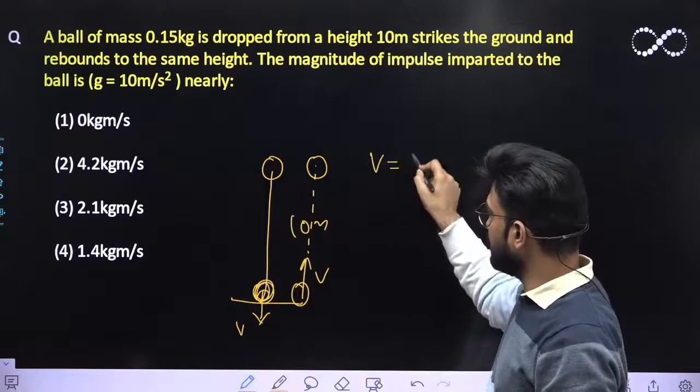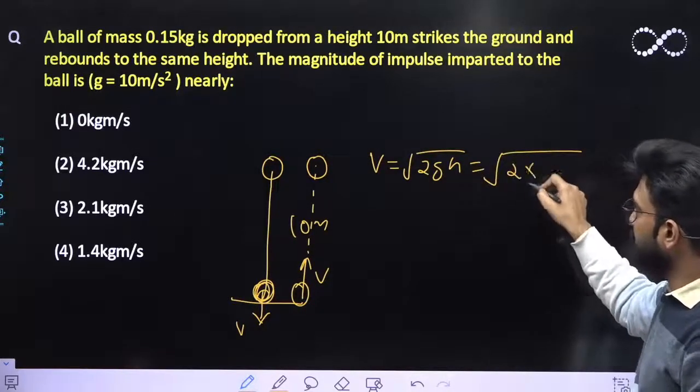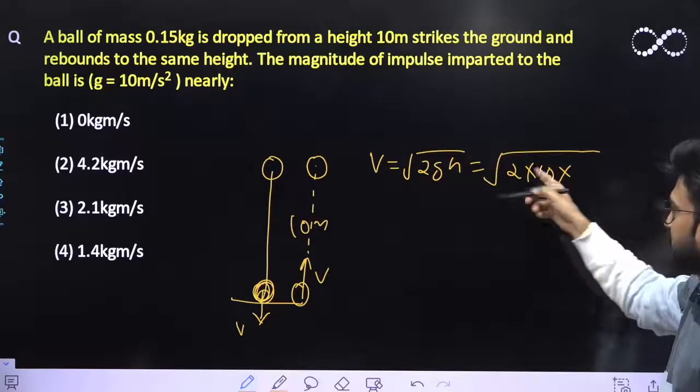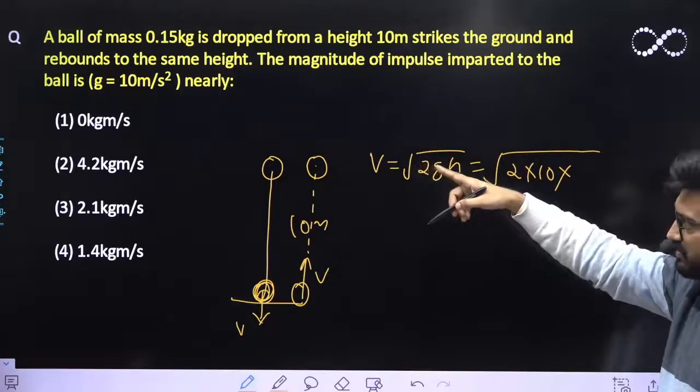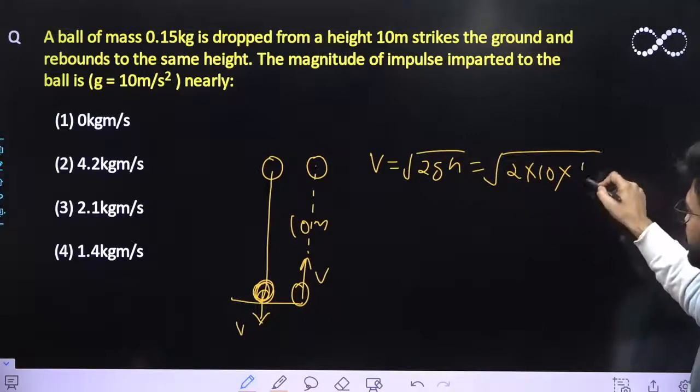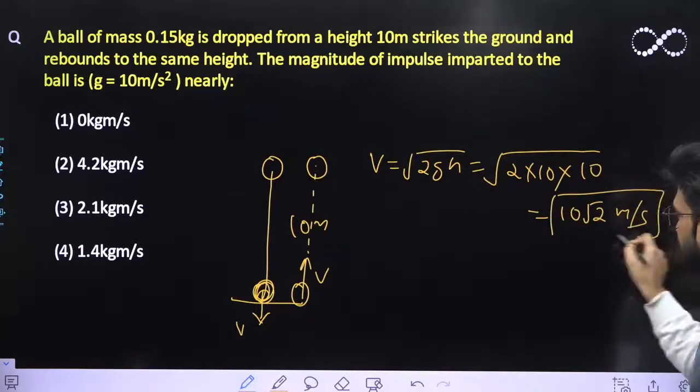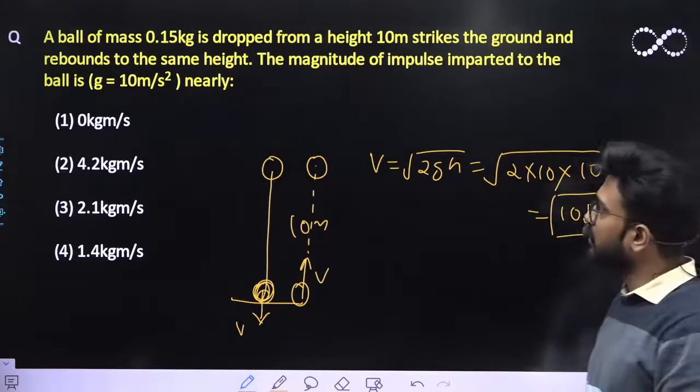So v must be equal to √(2gh), so it must be equal to 2 into 10 into—because remind you g has been given to you as 10 m/s², so we will be taking the value of that only—and the height must be 10, so it is equivalent to 10√2 m/s. This is the speed with which it will hit the ground.